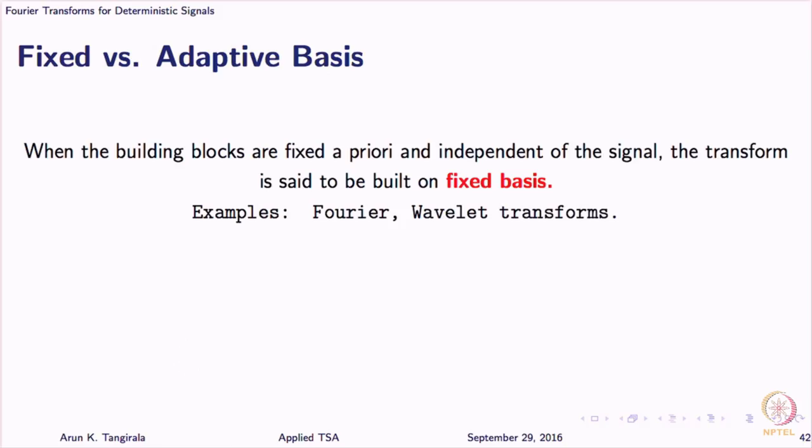Before we proceed to the Fourier series and transform, it is worthwhile talking about this concept of fixed versus adaptive basis. The basic building blocks used in a transform are called atoms or basis. At this moment, do not take the term basis in a linear algebra sense. We know what basis means in a linear algebra sense — if a set of functions constitutes a basis for some space, they have to be linearly independent. The term basis here should be interpreted simply as some building blocks.